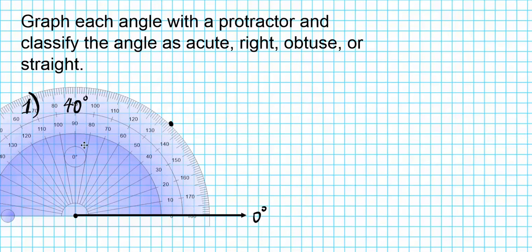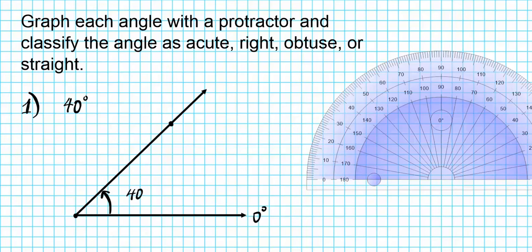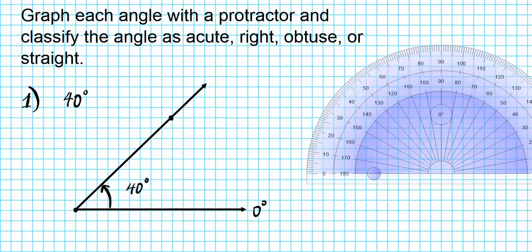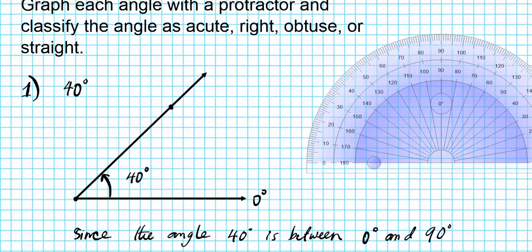We're done with our protractor. We're just going to place our ruler on these two points right here and draw the terminal ray that is an inclination of 40 degrees from the original ray. So this angular measure right here is 40 degrees. Now let's go ahead and classify this angle. This angle is between 0 and 90 degrees, which makes it an acute angle.